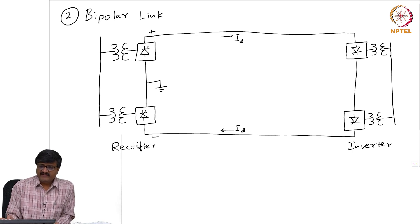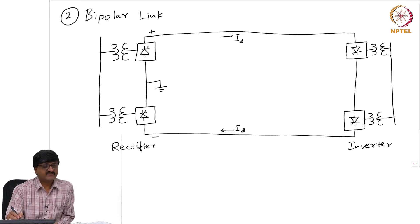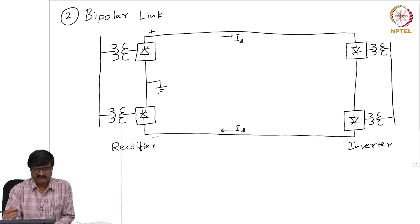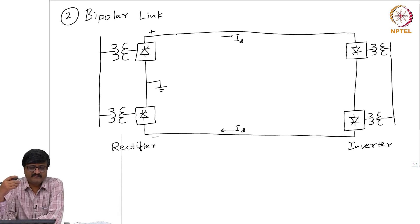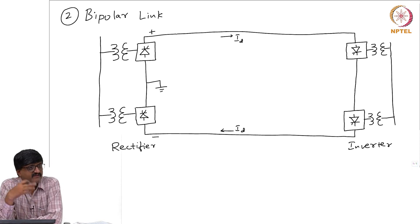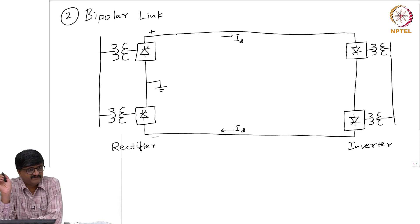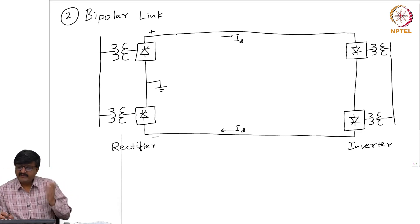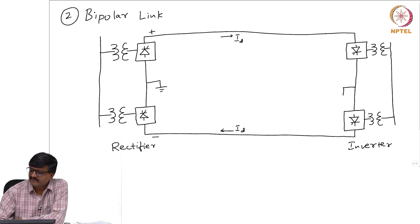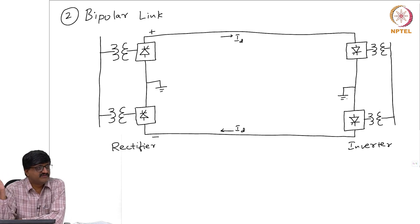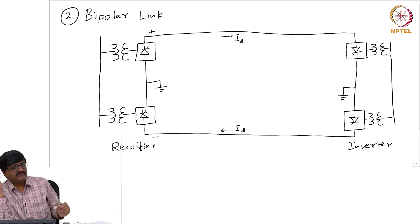At each side we have two 12-pulse converters and there is a midpoint on the DC side which is grounded. Please note we need grounding so that the two conductors are at the same magnitude of potential with respect to ground — one is positive, the other is negative — but the magnitude of the voltage between any conductor and ground is the same. Sometimes grounding is provided at both sides, though on rare occasions; even one side will do, but at least one side has to be grounded.